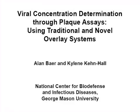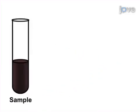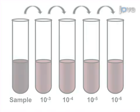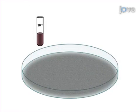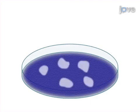The overall goal of this procedure is to determine viral concentration through the quantification of infectious virions by counting discrete plaques in cell culture. This is accomplished by first plating cells to form a confluent monolayer for infection. The second step is to perform serial dilutions of the unknown viral sample to be quantified. Next, the confluent monolayers are infected using the serial dilutions of the viral stock, followed by application of an immobilizing overlay. The final step is to fix and stain the plaques after the appropriate incubation time for the virus in question in order to count the discrete plaques.